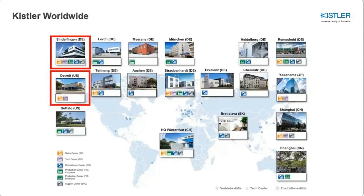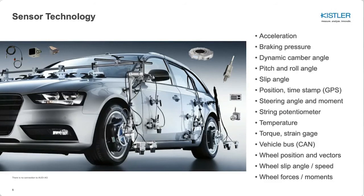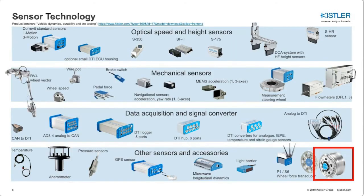Kistler is a worldwide company; however, most of our dynamics and durability sensors come from Sindelfingen in Germany. We're located just outside of Detroit in Novi, Michigan. Kistler has several areas with sensor technologies, from sensors in the road on highways to industrial process control with force and pressure. Our main area is vehicle test, and more specifically vehicle dynamics and durability, where we have a wide range of sensor solutions for acceleration measurements, speed and slip angle, all the way to wheel forces and moments. Today our main focus will be wheel force transducers, along with the steering and pedal robots.